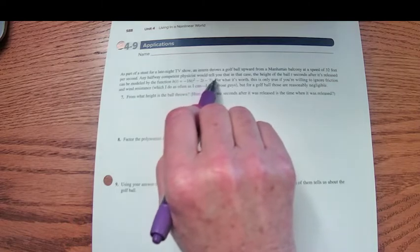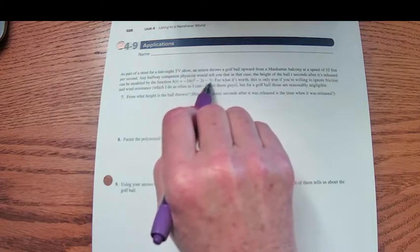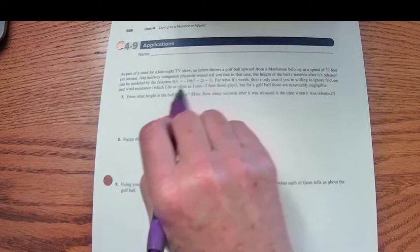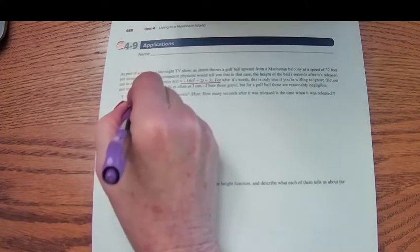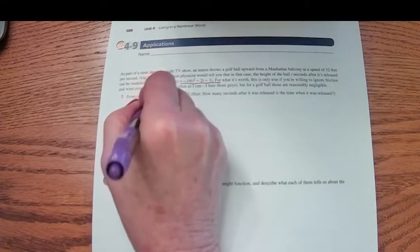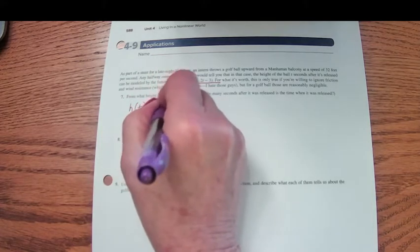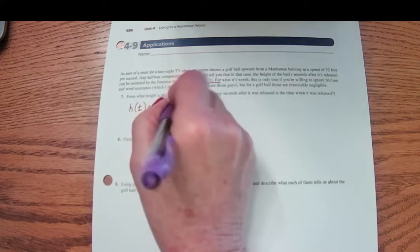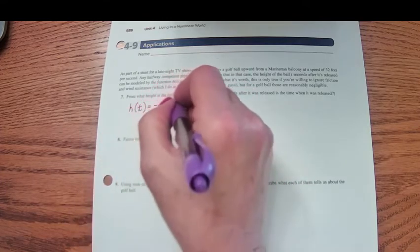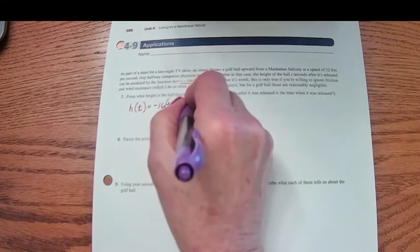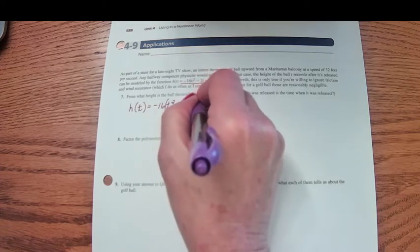They give us our equation right there. The height of the ball t seconds after it's thrown is negative 16 t squared—I'm sorry, negative 16 times the quantity t squared minus 2t minus 3.